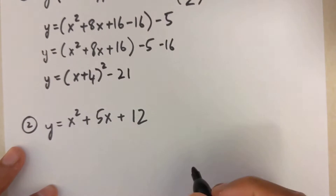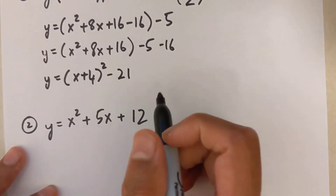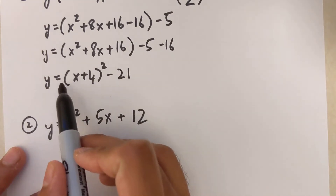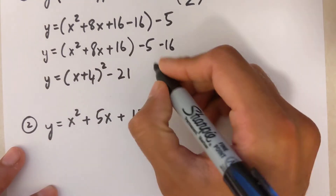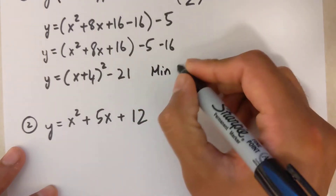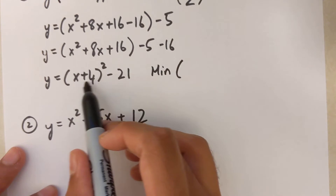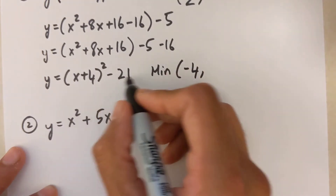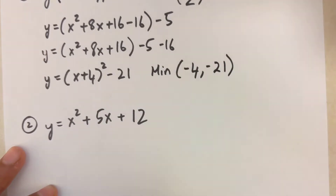Adding the remaining terms: minus 5 minus 16 gives negative 21. That's how you complete the square to convert from quadratic form to vertex form. Since the a value is positive, it's a minimum, and the vertex is at negative 4 comma negative 21 — the x value is the opposite of the number inside the bracket.